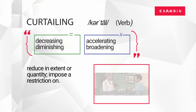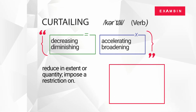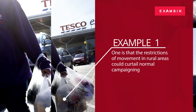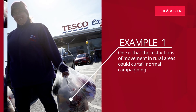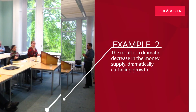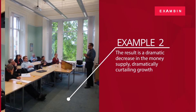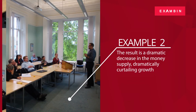We will see a few examples to understand the word curtailing better. Example 1: The restrictions of movement in rural areas could curtail normal campaigning. Example 2: The result is a dramatic decrease in the money supply, dramatically curtailing growth.